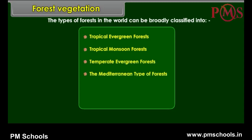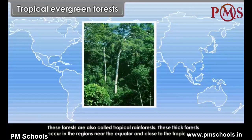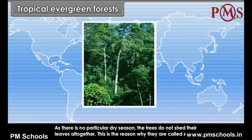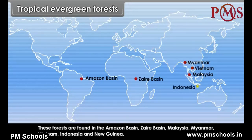Tropical Evergreen Forests. These forests are also called tropical rainforests. These thick forests occur in the regions near the equator and close to the tropics. These regions are hot and receive heavy rainfall throughout the year. As there is no particular dry season, the trees do not shed their leaves altogether, which is why they are called evergreen. These forests are found in the Amazon basin, Zaire basin, Malaysia, Myanmar, Vietnam, Indonesia and New Guinea.